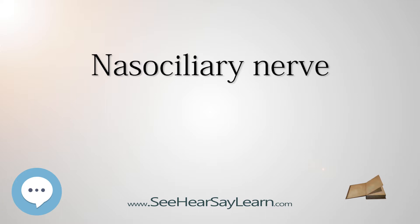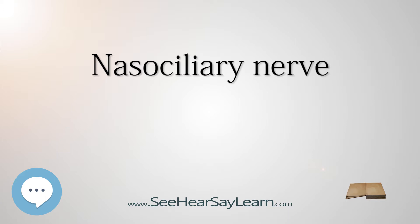The nasociliary nerve gives off the following branches: the anterior ethmoidal nerve, the posterior ethmoidal nerve, the infratrochlear nerve, the long ciliary nerve, and the communicating branch to the ciliary ganglion — also known as the long root of the ciliary ganglion. PLYCA is a mnemonic often used to remember these branches.